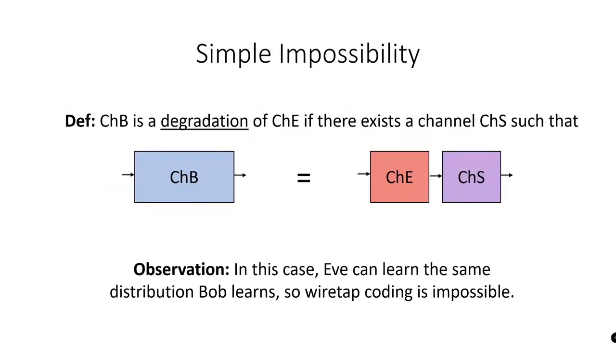To build intuition for this problem, we begin by showing a simple impossibility result. If Eve's channel can be used to perfectly simulate Bob's channel, then secure wiretap coding schemes must be impossible since Eve can essentially learn everything that Bob can learn. Thus, Bob would have no advantage over Eve, and we cannot send messages to Bob without Eve learning them.